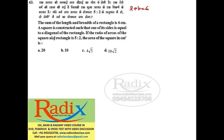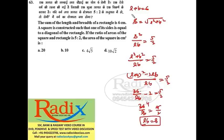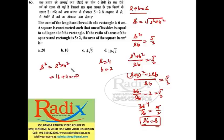Question 63: The sum of length and breadth of a rectangle is 6 cm. A square is constructed with side equal to the diagonal of the rectangle. Given area of square / area of rectangle = 5/2. So (l² + b²)/(lb) = 5/2, rewriting: (l+b)² − 2lb / lb = 5/2, giving 36/lb − 2 = 5/2, so lb = 8. With l+b=6 and lb=8, values are l=4, b=2. Area of square = l²+b² = 16+4 = 20. Answer is option A.